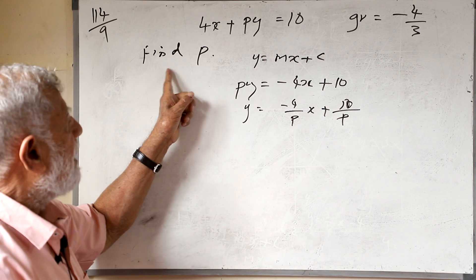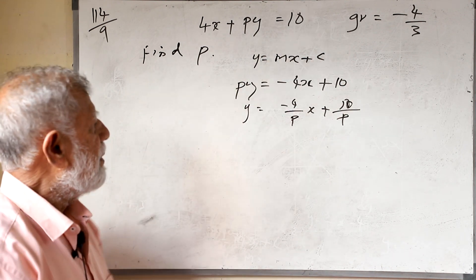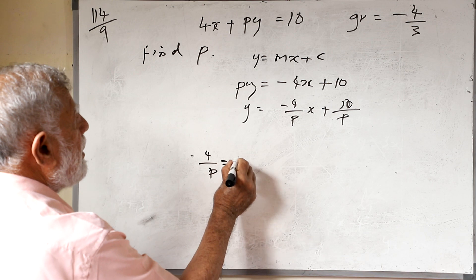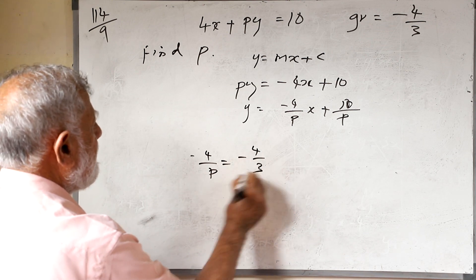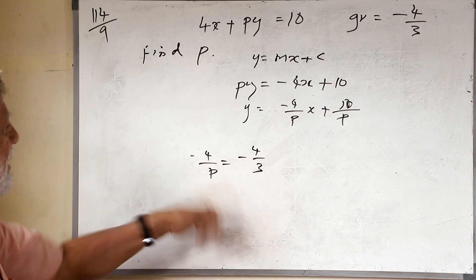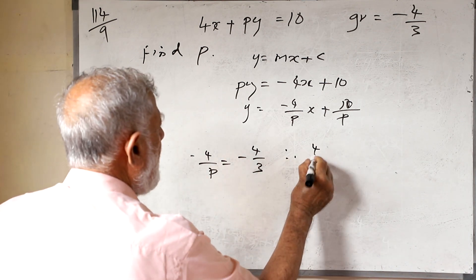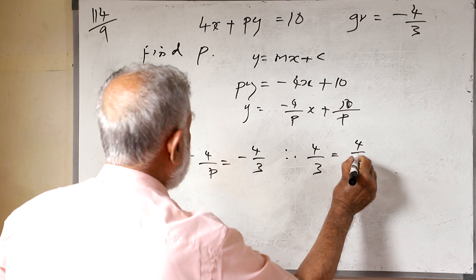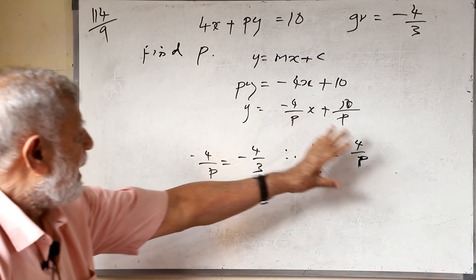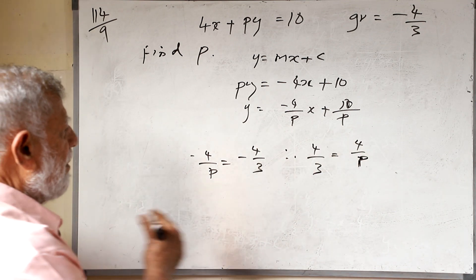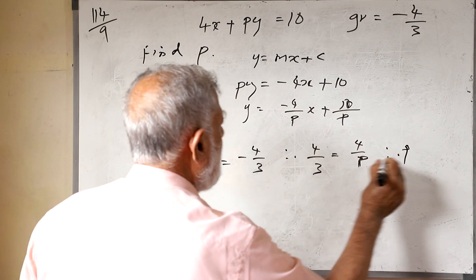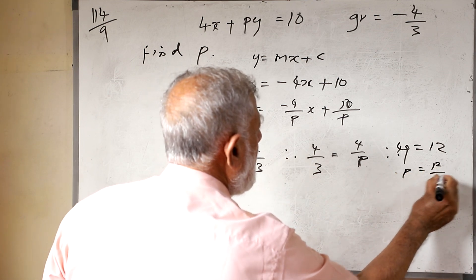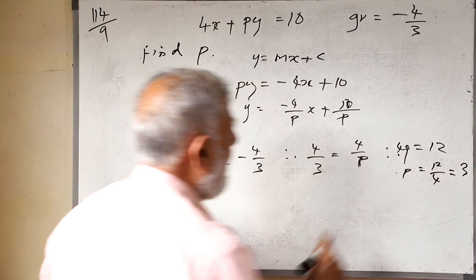The first question is to find p. The gradient here is -4/p. We are told the gradient is -4/3. So we write: -4/p = -4/3. Both are negative, so we get 4/p = 4/3. Cross-multiplying: 4p = 12, therefore p = 12/4 = 3. So p is equal to 3.